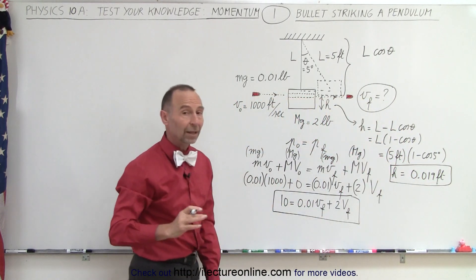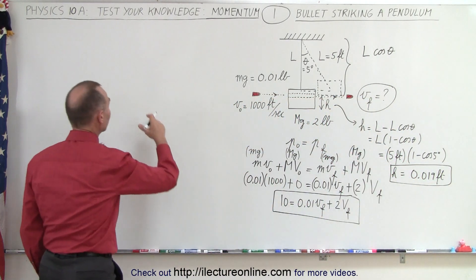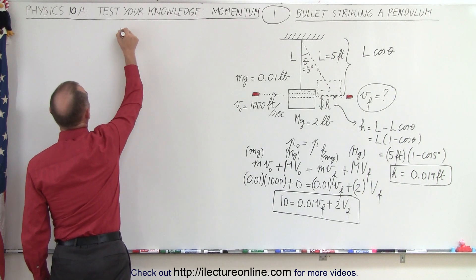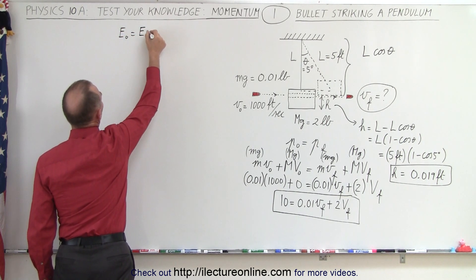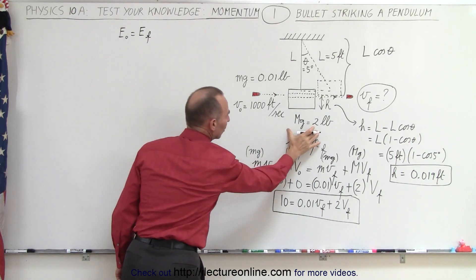So 0.019 feet is the height gained by the block after the bullet strikes it. Now that we know the height gain, we can use the second part of the problem where energy initial equals energy final.